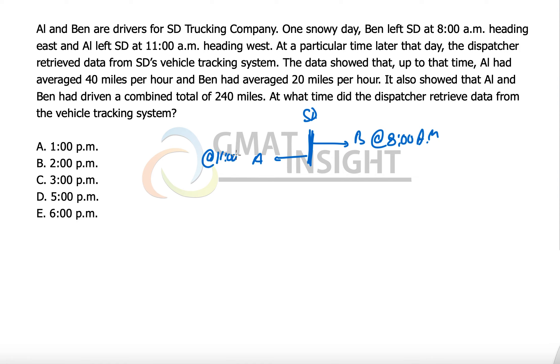This means there are three hours less that Al must have traveled by the time the tracking has been done. Now the data showed that up to that time, Al had averaged a speed of 40 miles per hour and Ben had averaged a speed of 20 miles per hour. So Ben's speed was 20 miles per hour and Al's speed was 40 miles per hour.